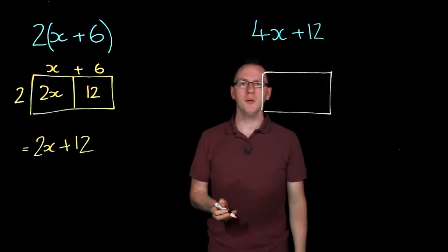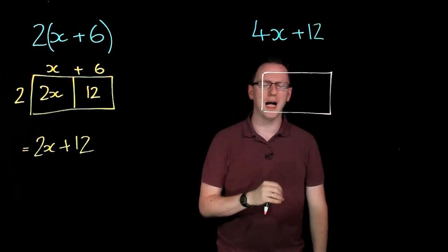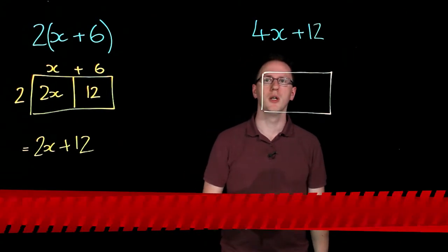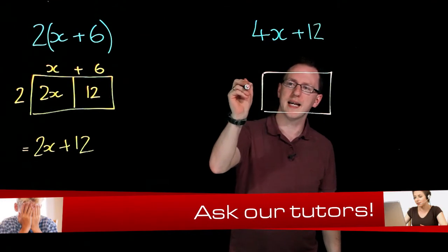But I have a problem because I don't know what length this is going to be. I'm going to look at my numbers 4 and 12 and think what do they have in common? So each of them are divisible by 2. So let me make this side length 2.